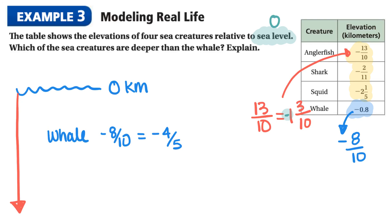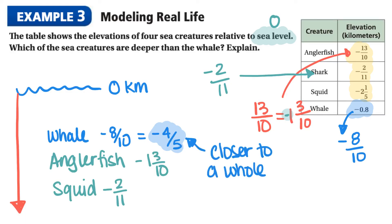So if we look at the anglerfish and the squid, we can see that with the whole numbers, it makes it a lot easier. So after the whale, then we have the anglerfish, and then we have the squid. And then for the shark, well, the shark is negative 2 over 11. And if we compare that to the whale, negative 4 over 5, well, the whale is negative 4 over 5, which is a lot closer to a whole than negative 2 over 11. So therefore, we know that the shark is the closest to the water.